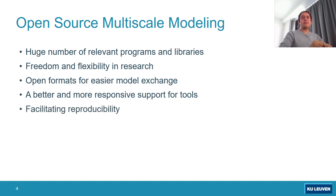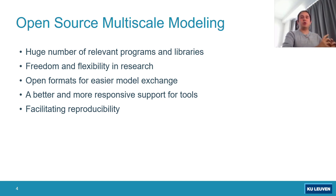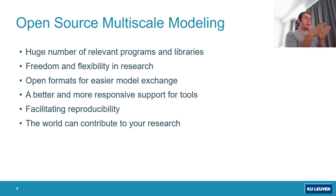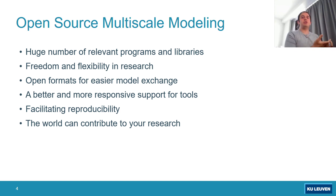Open source also provides much better and more responsive community support compared to proprietary tools. You can see that when you start working with a tool, there is a community around it that kindly supports users. Another important aspect is reproducibility, which is becoming more and more important for open research and open science. When you do something, it should be reproducible by others — otherwise they cannot trust your results. With open source tools, everyone on the planet can grab your code or model and reproduce the results because no licensing is required. Also, the whole world can contribute to your work — for example, if you put a solver on GitHub or GitLab, people will start to contribute to it to make it better.